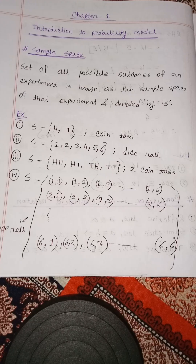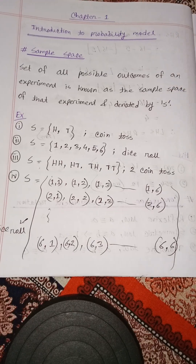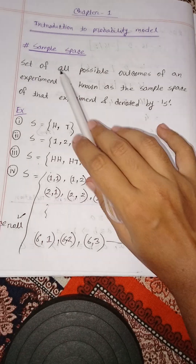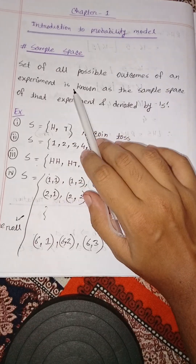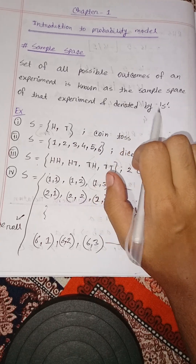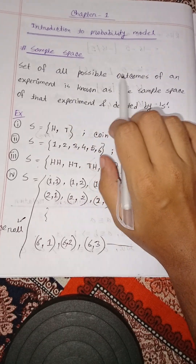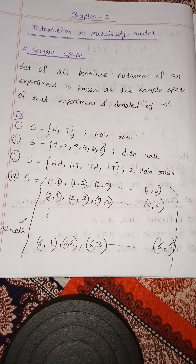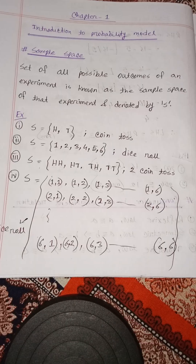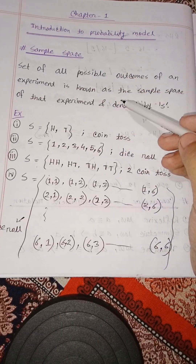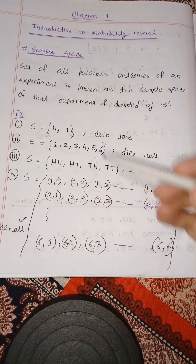The probability model is based on the concept of sample space and event. The set of all possible outcomes of an experiment is known as the sample space of that experiment, and it is denoted by S. The result of all possible outcomes is the sample space, denoted by S.